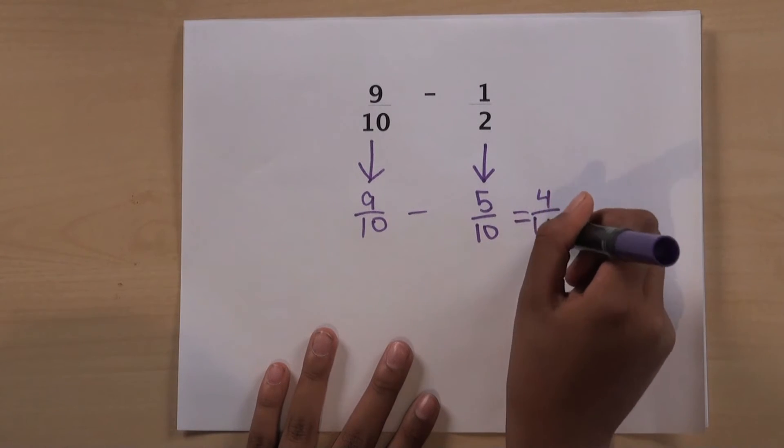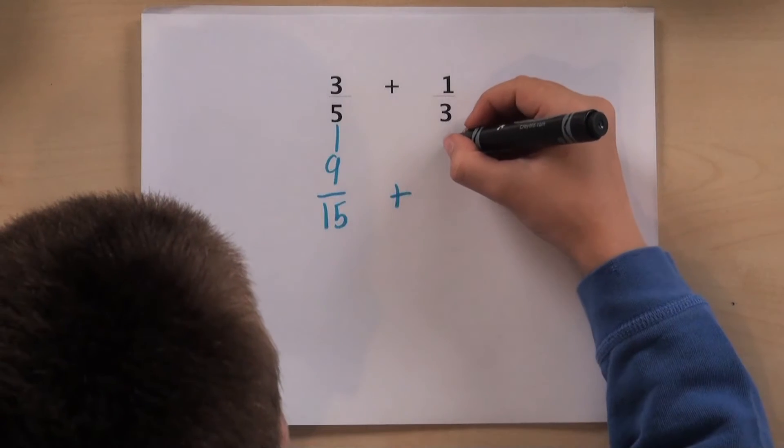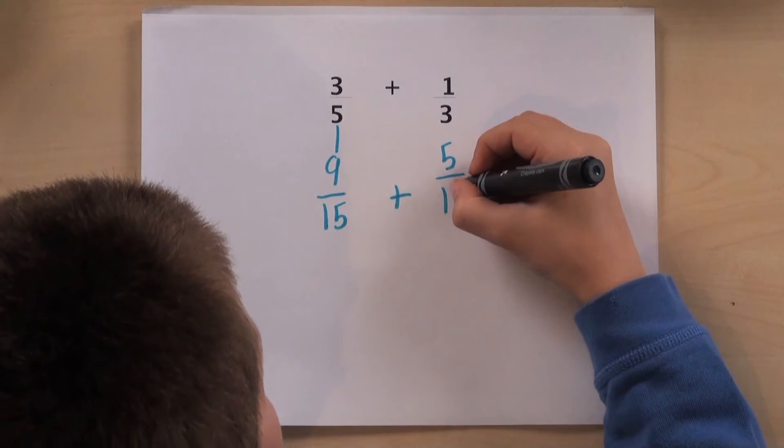To add and subtract fractions with different denominators, they have to know how to change one or both of the fractions to make the bottom numbers the same.